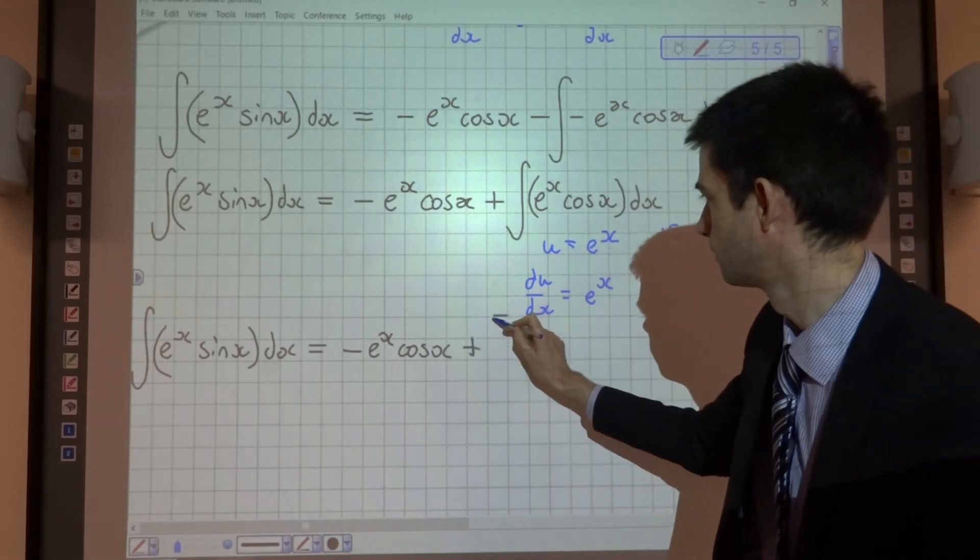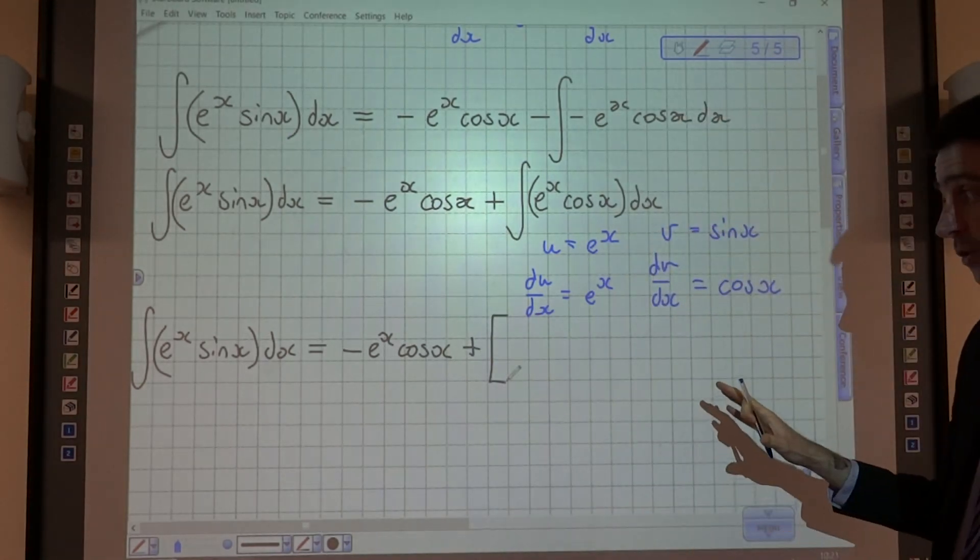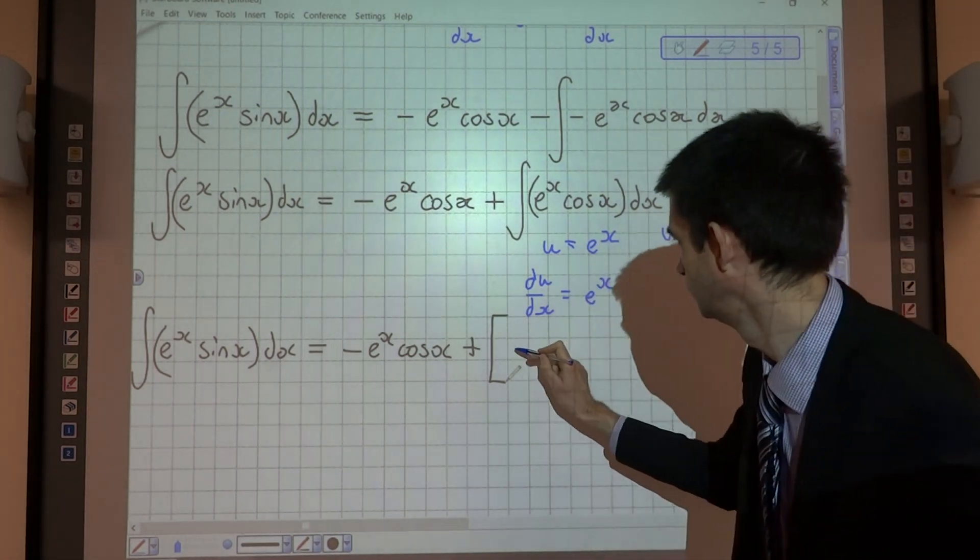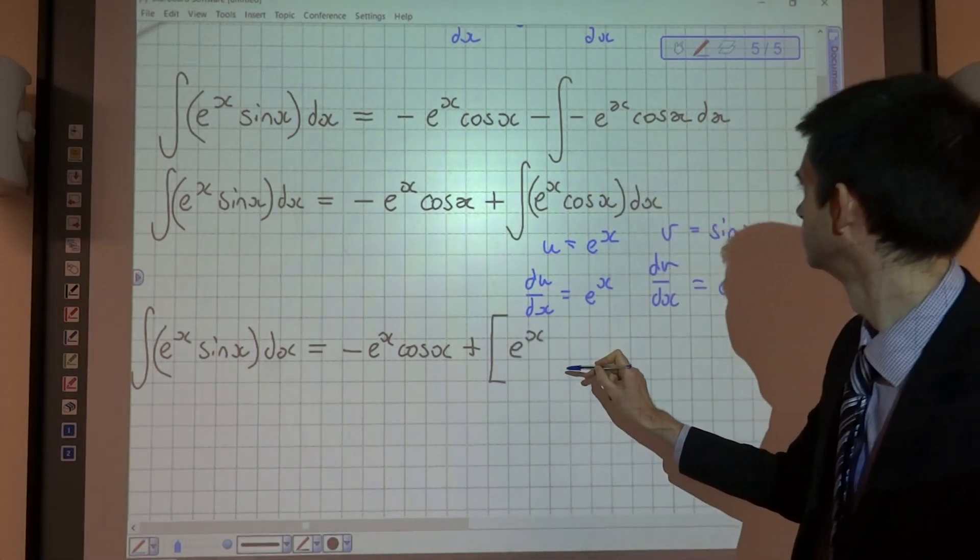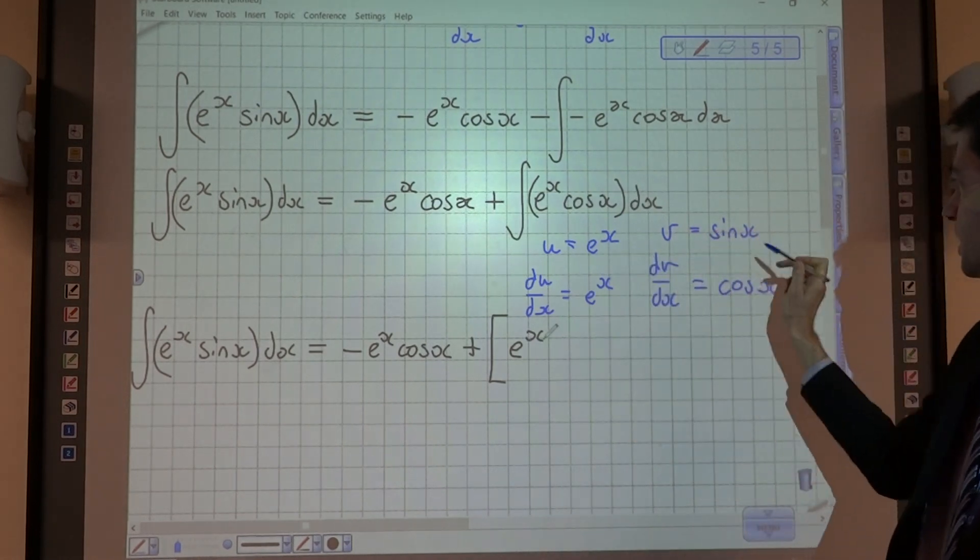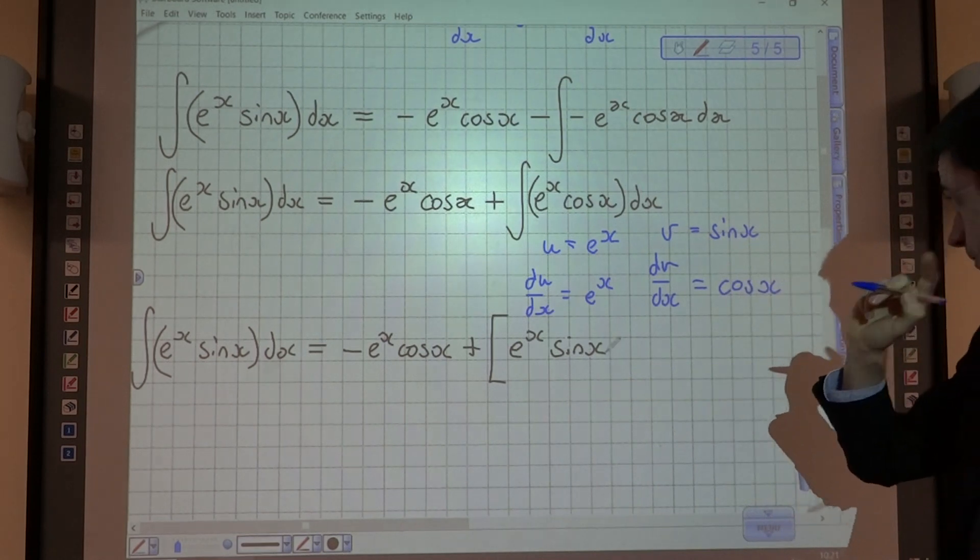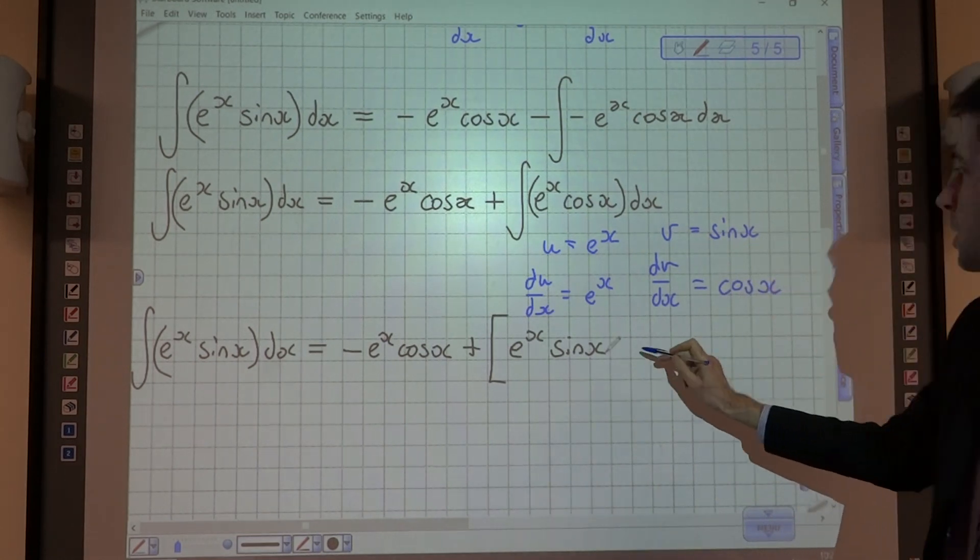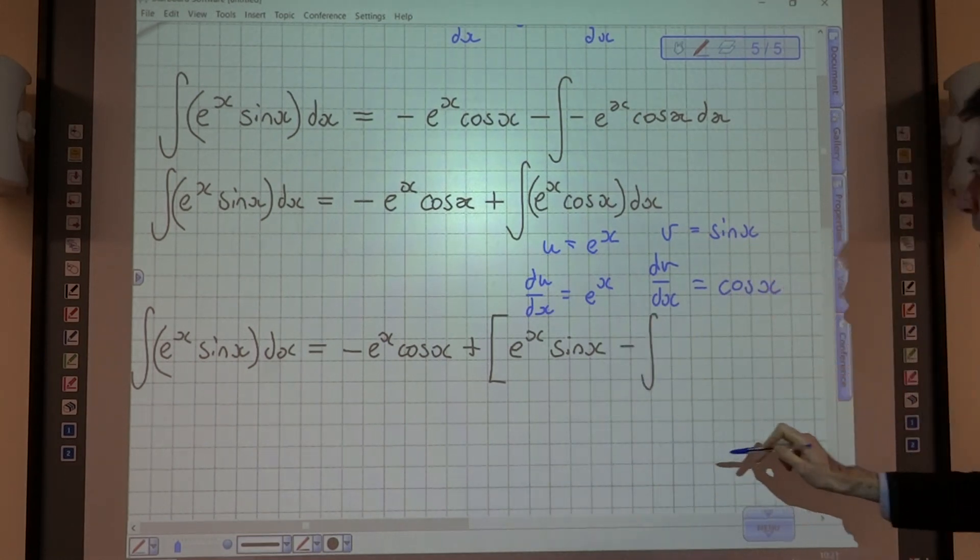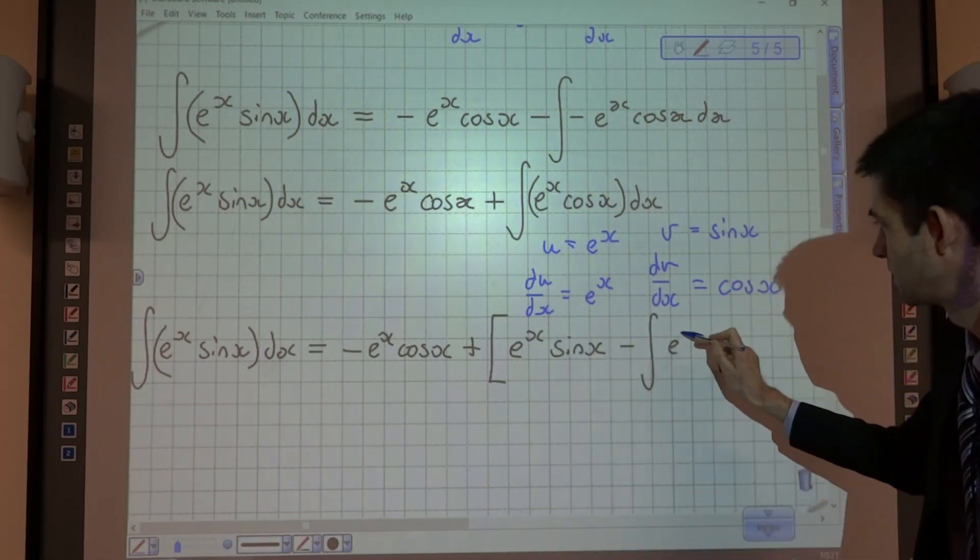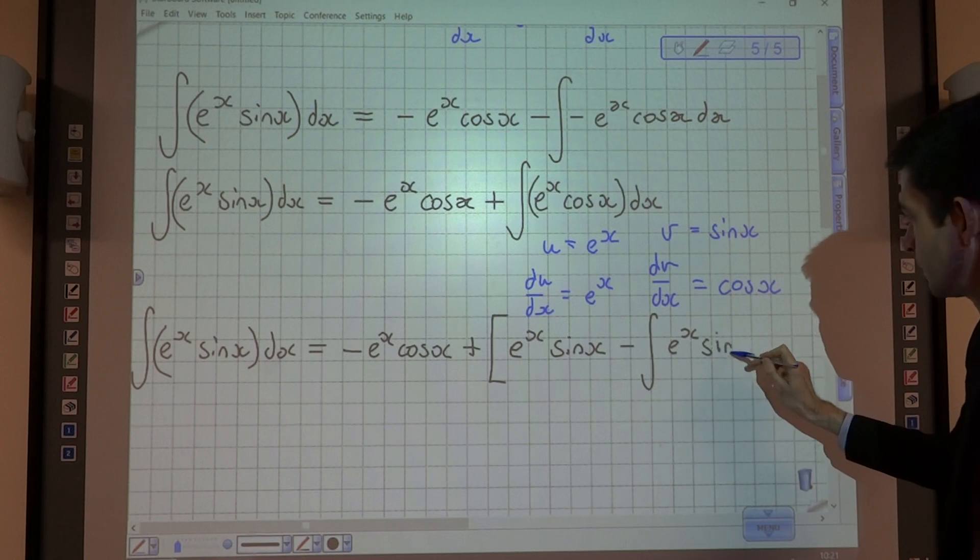Plus, now I've got my second integration by parts. So I've got uv, so e to the x sin x minus the integral of v du dx. So e to the x sin x.